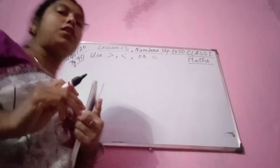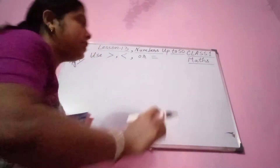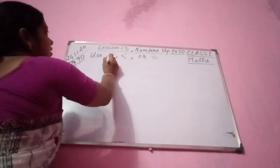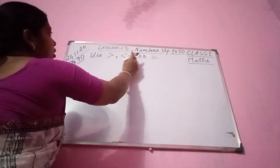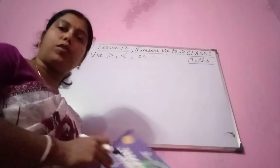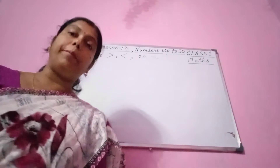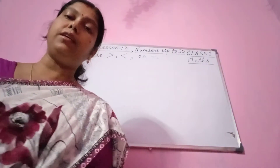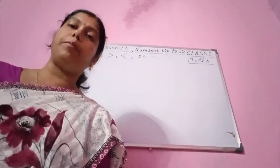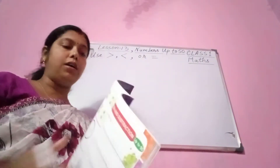So use greater, smaller, or equal to. Please see these signs. This is greater, this is smaller or equal to. We are going to compare numbers here — the first number we are going to compare with the second number.